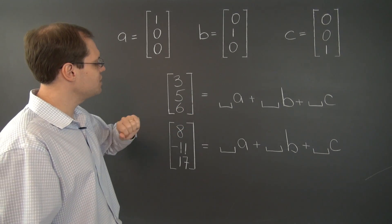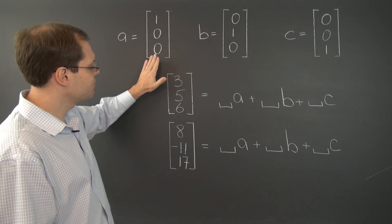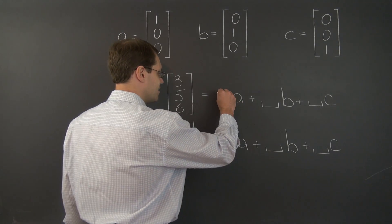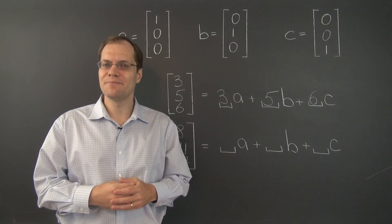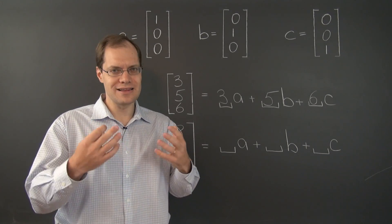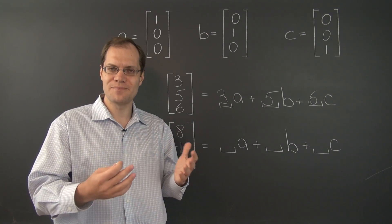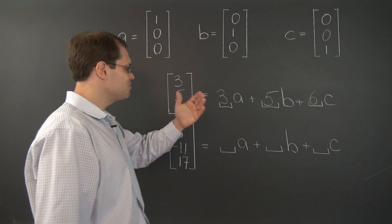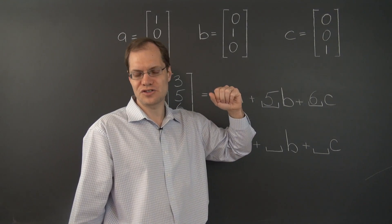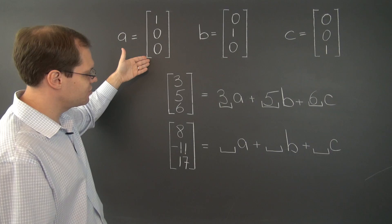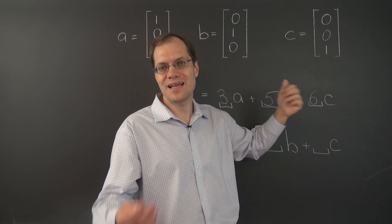When we decompose the vector (3, 5, 6) with respect to these very special vectors A, B, and C, we clearly need 3 of A, 5 of B, and 6 of C. The only way to get this 3 is to take 3 of A; the only way to get this 5 is to take 5 of B; and the only way to get this 6 is to take 6 of C. You have to be pretty good at linear combinations to do decomposition, and if you are, it's just very easy to see that these coefficients are correct. That's how simple these vectors are.